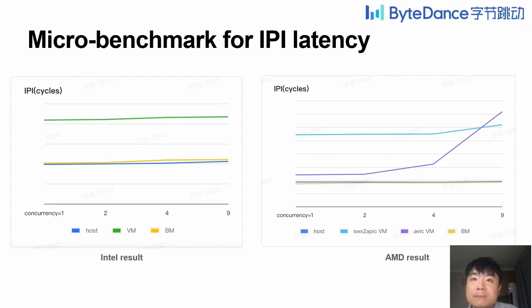Finally, we present our performance results. Here is the IPI latency result. The left one is for Intel. We can see that the IPI latency in the VM is nearly equal to that in native host, but the VM's IPI latency based on upstream KVM is much worse. The AMD result is on the right. The IPI latency in the VM is nearly equal to native host, and is even much better than the VM when AVIC is enabled.